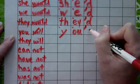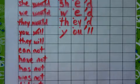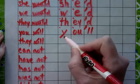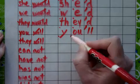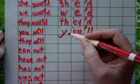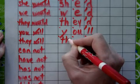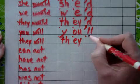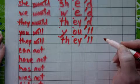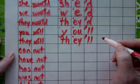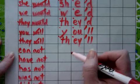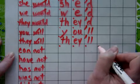And apostrophe L-L — we keep the two L's: you'll. The next two words is 'they will.' We drop the W-I and leave the two L's. TH is the digraph, A-Y is the spelling in the word 'they,' and apostrophe L-L: they'll.